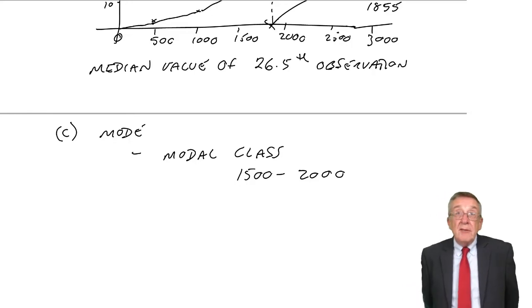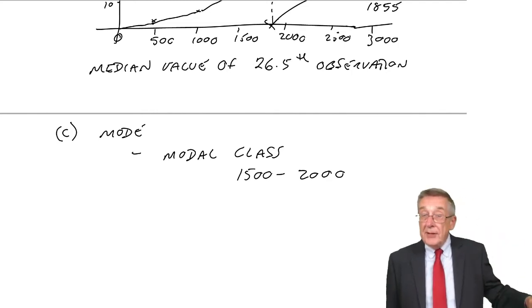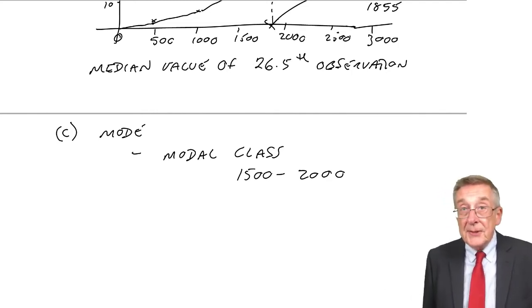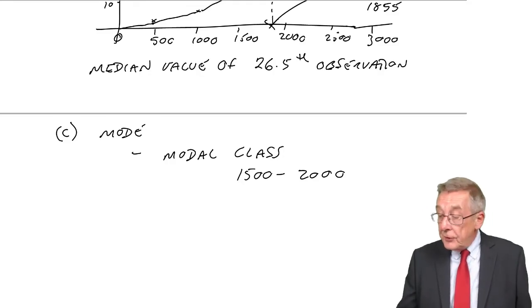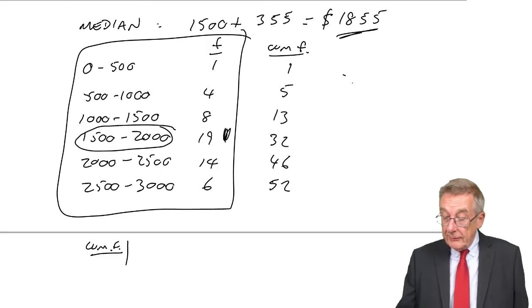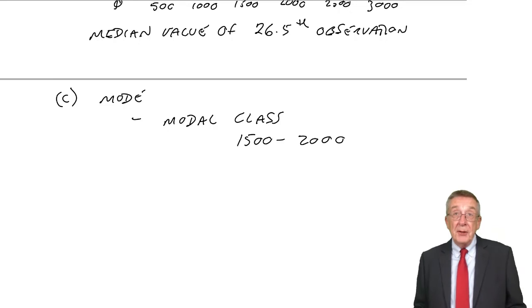There are, in fact, ways of putting an exact value on it, which are a bit odd, but you can't be asked that in the exam. All you can be asked is the modal class. And there it is, 1,500 to 2,000. And just as with the previous example on discrete variables, there can be more than one. If two of the groups had a frequency of 19, fine, there'd be two modal classes. Normally, certainly in exam questions, there is only the one.